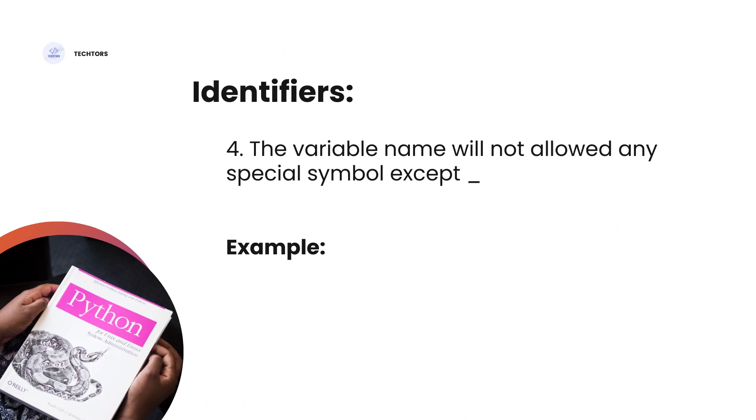Fourth rule: The variable name will not allow any special symbol except underscore. Now, we will create, let's look at the variable name. Where is the symbol? Special symbol except underscore. Underscore we will use.